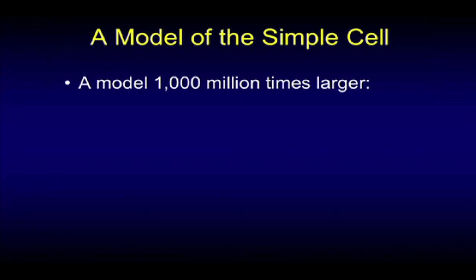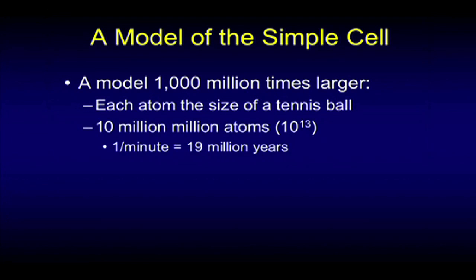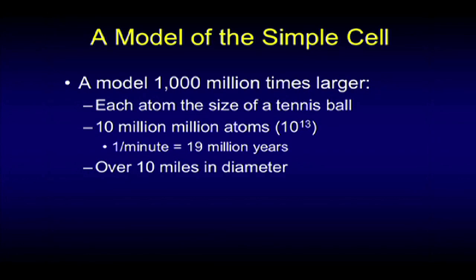If we were to make a model of a simple cell — let's imagine a model that's 1,000 million times larger than reality, in other words, a billion times larger than reality — each atom will be about the size of a tennis ball. We would need 10 million million atoms, 10 to the 13th. If we counted one per minute, it would take 19 million years just to count them. This model would be over 10 miles in diameter.